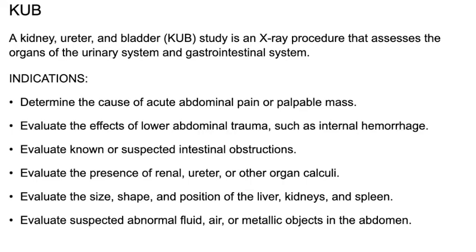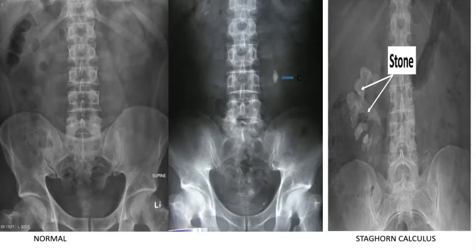Now let's start with X-rays. We have the KUB — kidney, ureter, and bladder X-ray. This is a radiographic study that accesses the organs of the urinary system and gastrointestinal system. It looks like a simple abdominal X-ray. These are the indications you need to know very well.